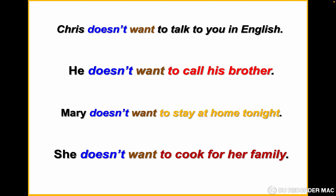We notice that with Chris, he, Mary, and she, the verb doesn't take an 's' because it's with 'doesn't'. In the negative form, the verb doesn't take 's' even if it is with Chris, he, Mary, or she. Let's repeat: Chris doesn't want to talk to you in English. He doesn't want to call his brother. Mary doesn't want to stay at home tonight. She doesn't want to cook for her family.